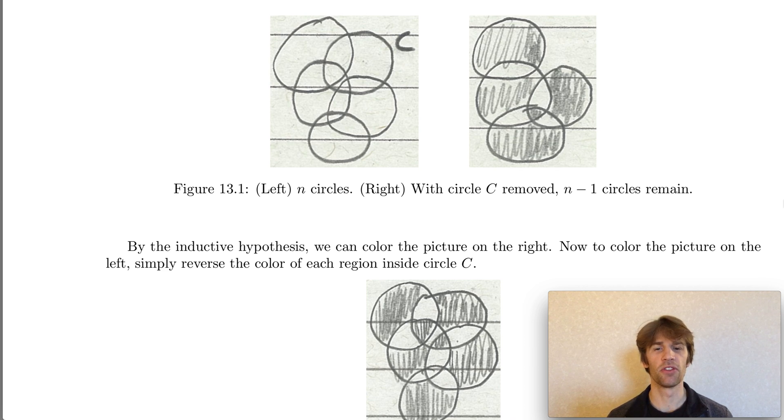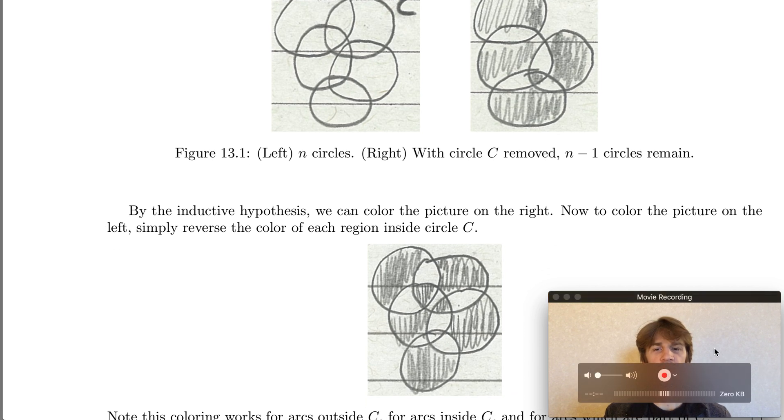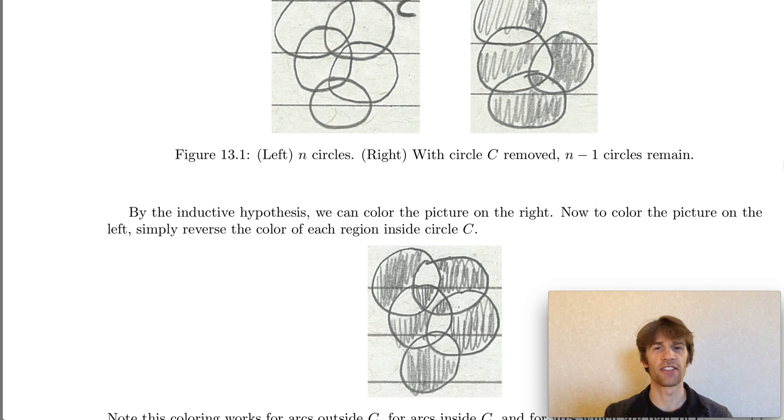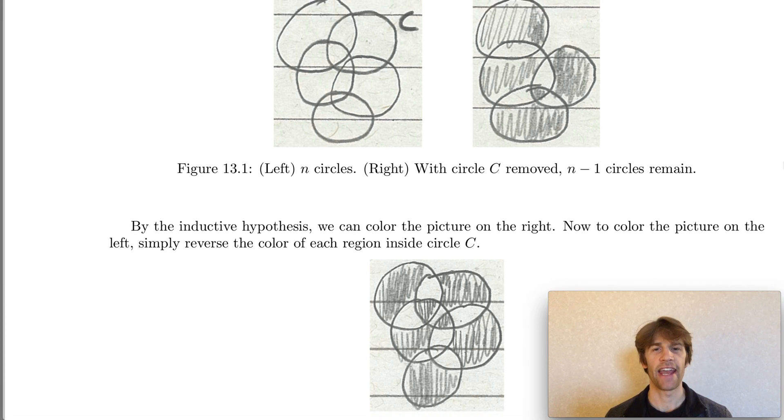And now what we'll do, as drawn in the bottom here, is we'll add in our last remaining circle. And we'll reverse the color inside this remaining circle. So if we had a portion that was colored with a dark color, now inside our newly added circle color it light. Or if we had a region that was previously colored with our light color, now inside this newly added circle color it dark.